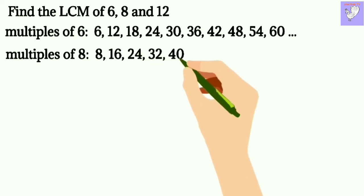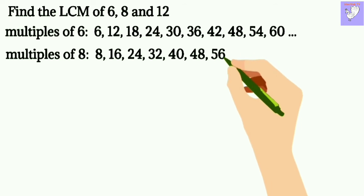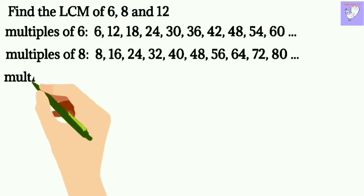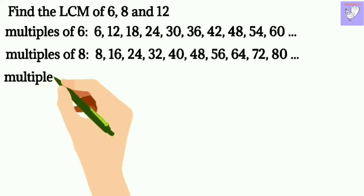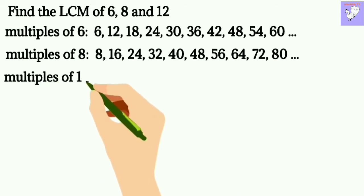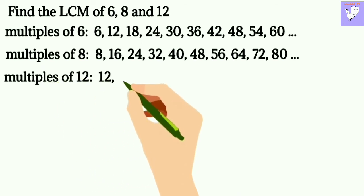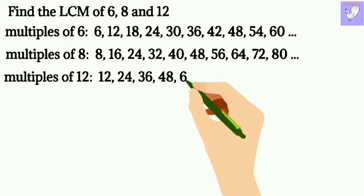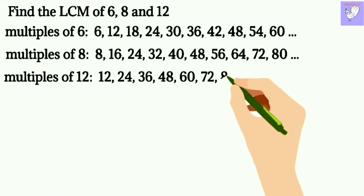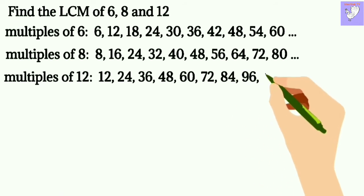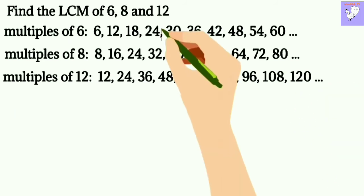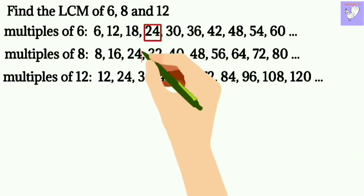Multiples of 8 are 8, 16, 24, 32, 40, 48, 56, 64, 72, 80 and so on. Multiples of 12 are 12, 24, 36, 48, 60, 72, 84, 96, 108, 120 and so on.